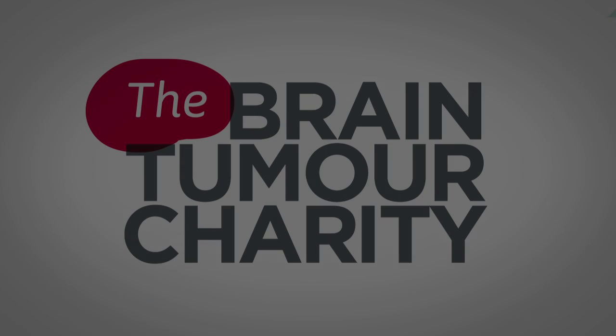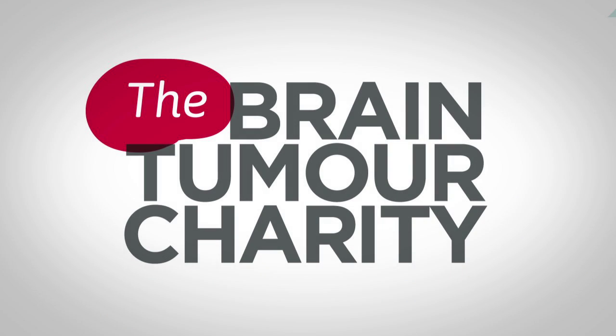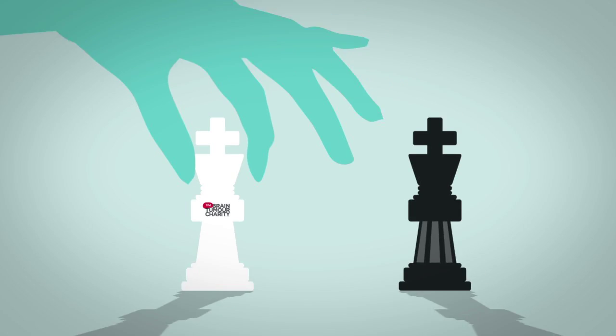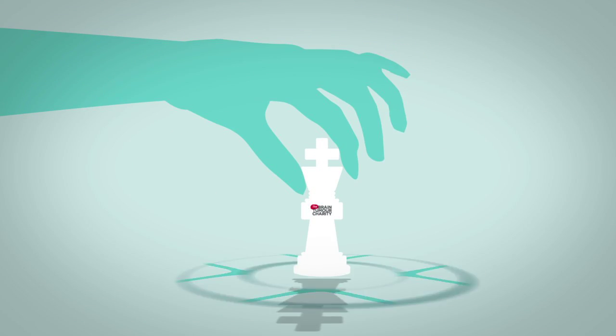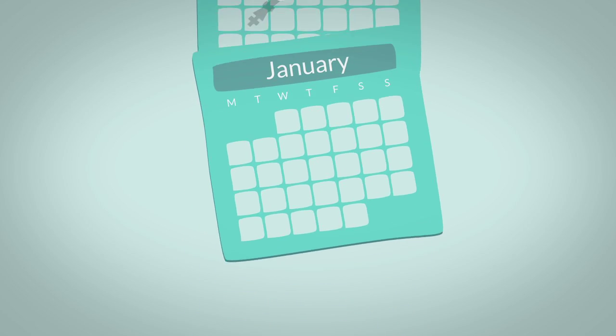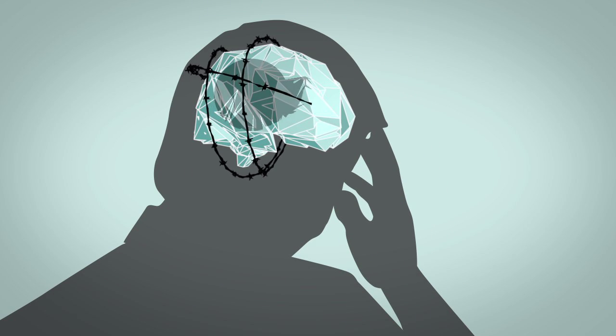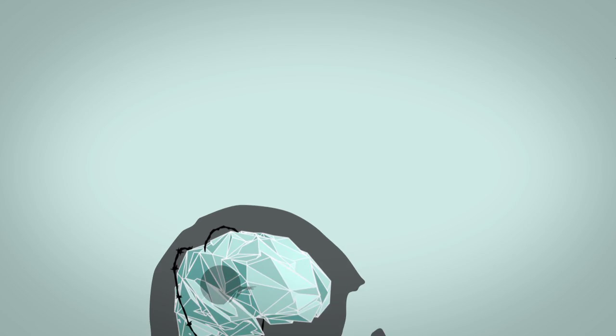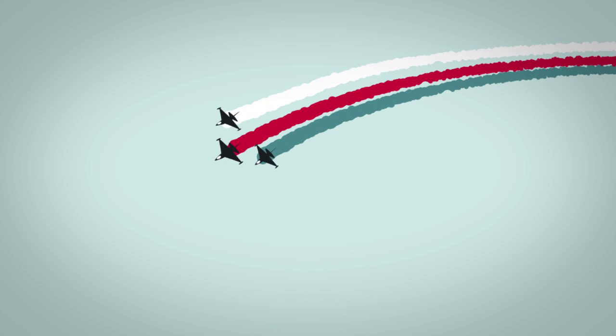That's why the Brain Tumour Charity exists. We are here to do everything we can to defeat brain tumours. Our goals are to double survival and halve the harm that brain tumours have on people's lives. Since 1996, we've been at the forefront of the fight against this disease.